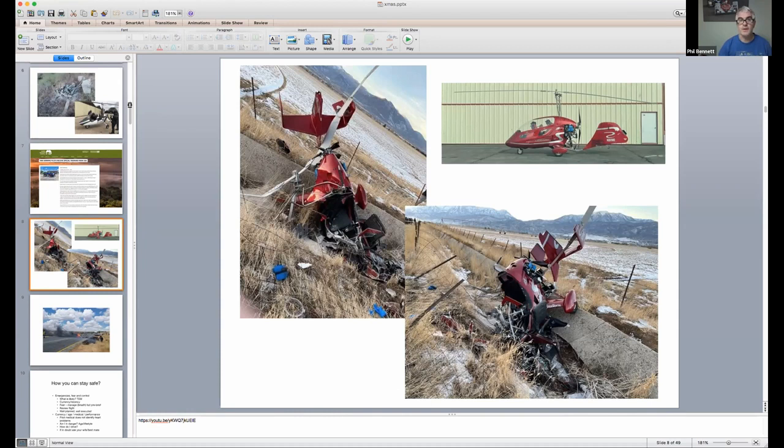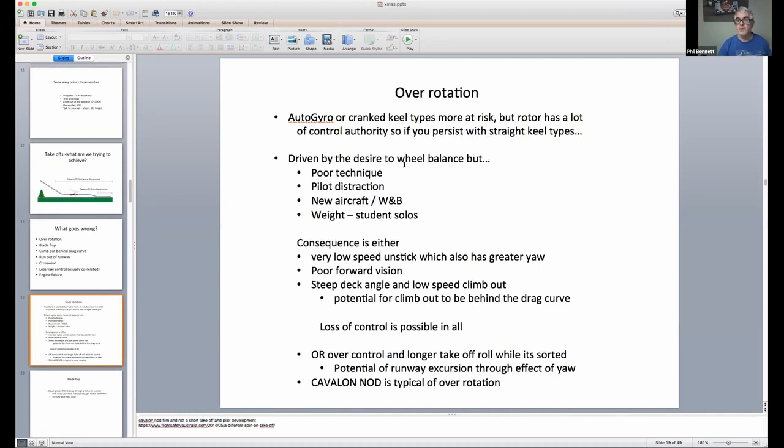This kinked tail, obviously, allows a much higher nose attitude during the ground roll, or trying to get to a wheel balance, than a Magni M16, which has got a straight, a completely straight keel. So, if you over-rotate, it's typically because you've tried, or, in your mind, you're trying to get to a wheel balance.